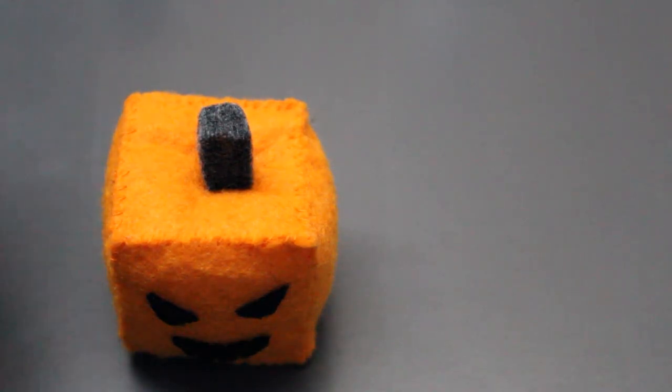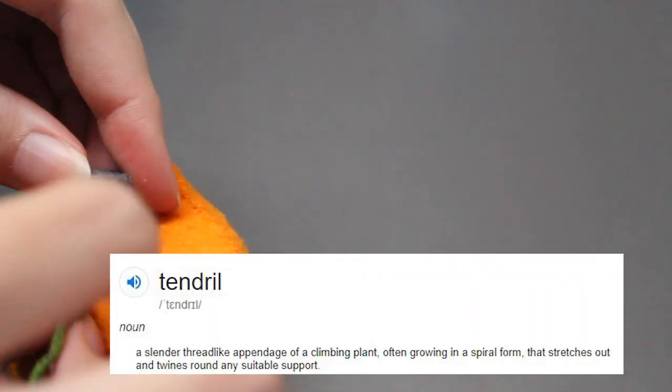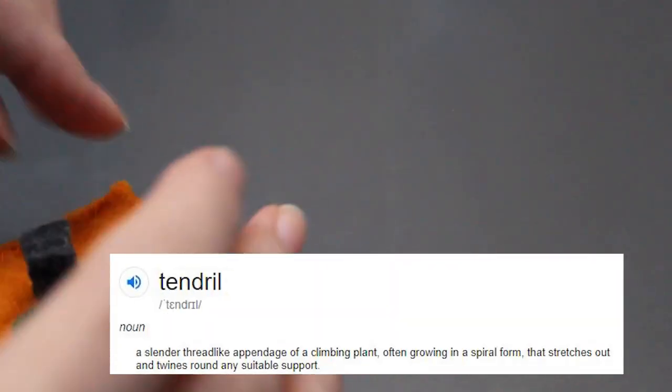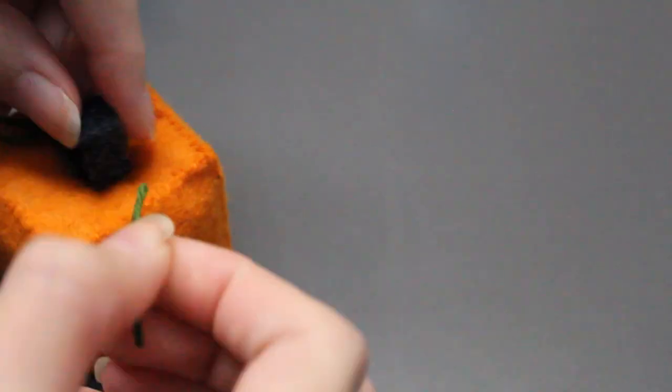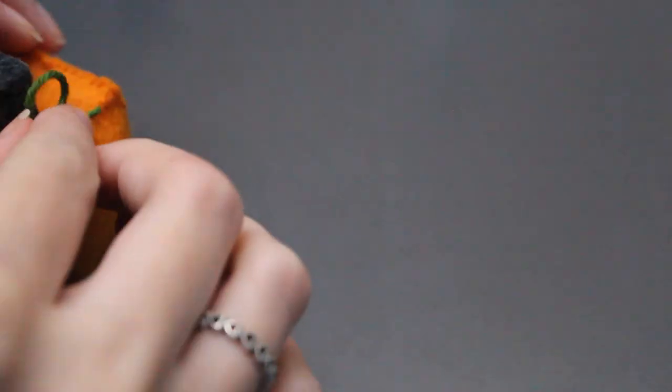Now using thick green thread, make the tendrils, aka those green strings on top of pumpkins and other plants. I had to look that up. Just curl them a little and stick them to the pumpkin using clear glue. Sewing is probably not a good idea, but you can obviously try it if you don't have glue.